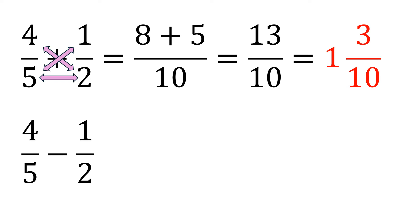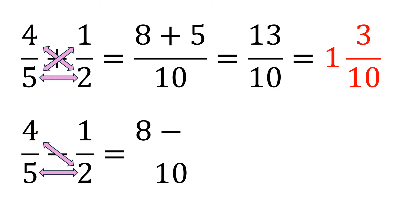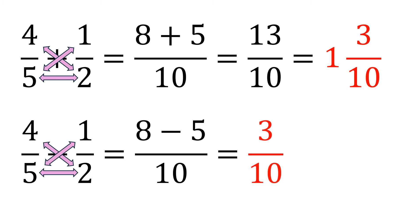For the second one — subtraction with dissimilar fractions — we do the same thing: multiply the denominators five times two is ten, then cross-multiply: four times two is eight, minus five times one is five. It's the same procedure as before except it is now subtraction, so eight minus five is three and we copy the denominator ten. The answer is three-tenths.